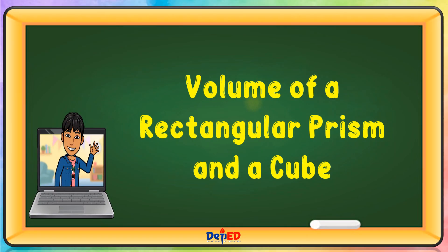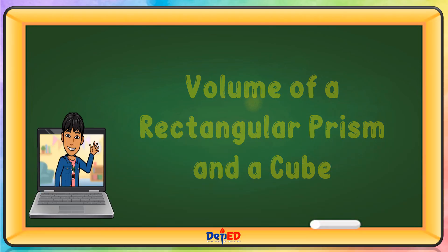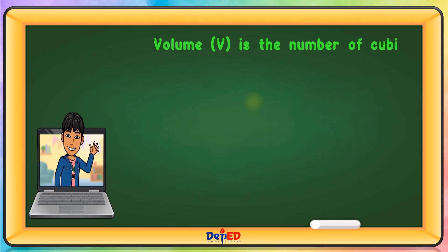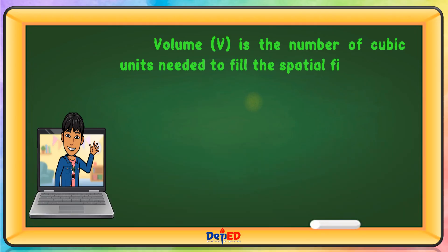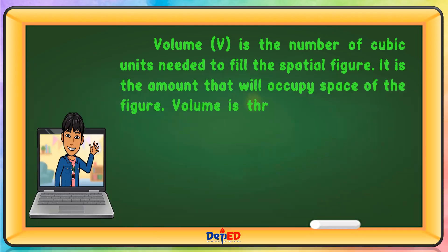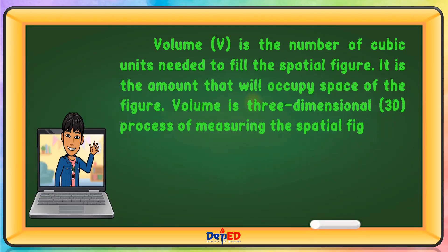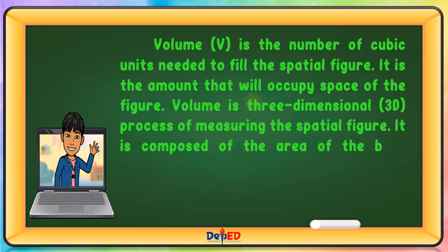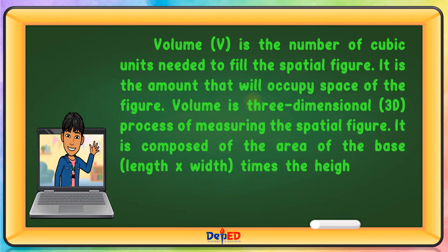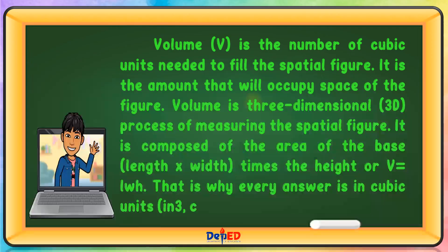Volume of a rectangular prism and a cube. Volume is the number of cubic units needed to fill a spatial figure. It is the amount that will occupy the space of the figure. Volume is a three-dimensional or 3D process of measuring a spatial figure. It is composed of the area of the base, which is the length times width, and the height. So volume is length times width times height, which is why every answer is in cubic units.